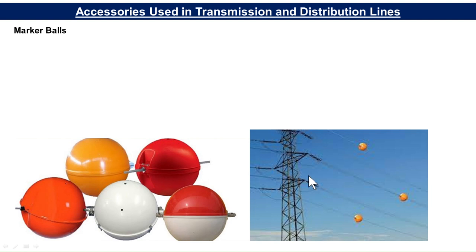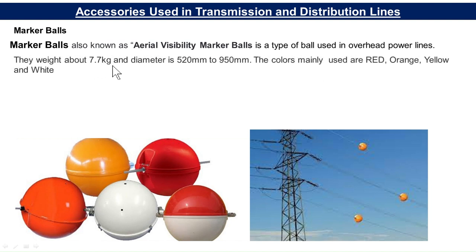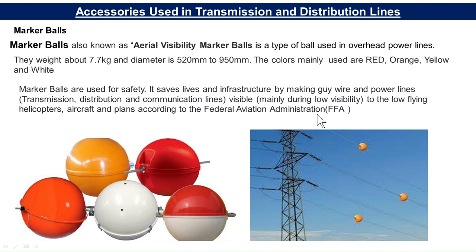Then there are marker balls, which you have seen suspended on various transmission lines. Marker balls, also known as aerial visibility marker balls, are used on overhead power lines. They weigh about 7.7 kg, with diameters ranging from 520 mm to 950 mm. The colors mainly used are red, orange, yellow, and white. They are used for safety — making guy wires and power lines visible to low-flying helicopters, aircraft, and planes, according to the Federal Aviation Administration. They are generally used on transmission lines near airfields.